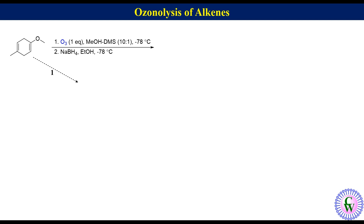To draw the product of the first step, cut the double bond to get the skeleton and then put two oxygen atoms at the terminus of the double bond. Thus the product will be methyl (Z)-4-methyl-6-oxo-hex-3-enoate.